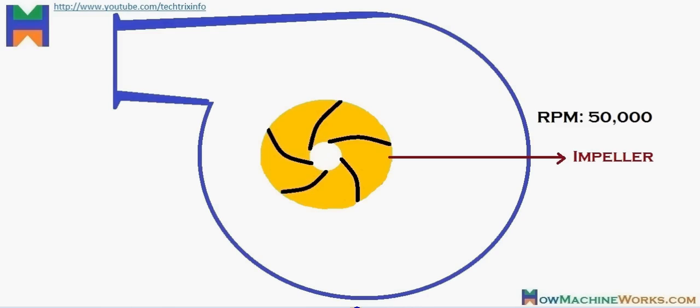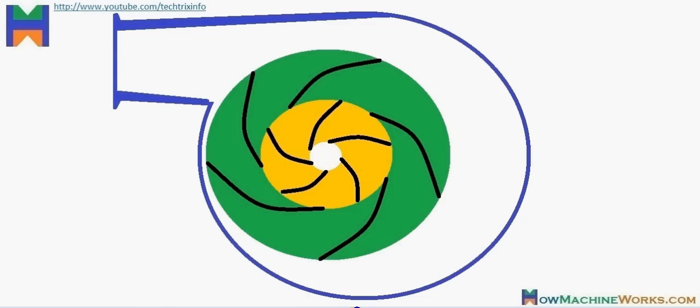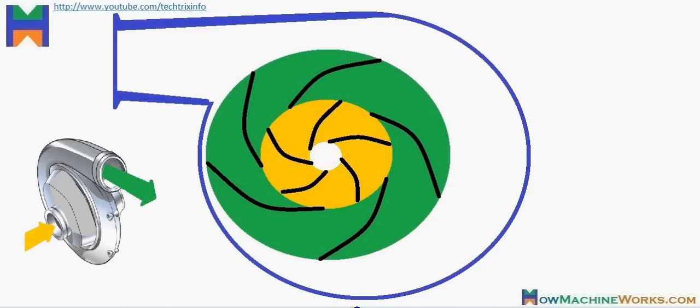The impellers rotate at nearly 50,000 to 60,000 rpm and get their drive from the crankshaft of the engine itself. Then we have the diffusers - that's the diffuser. It's a stationary unit, it doesn't rotate.